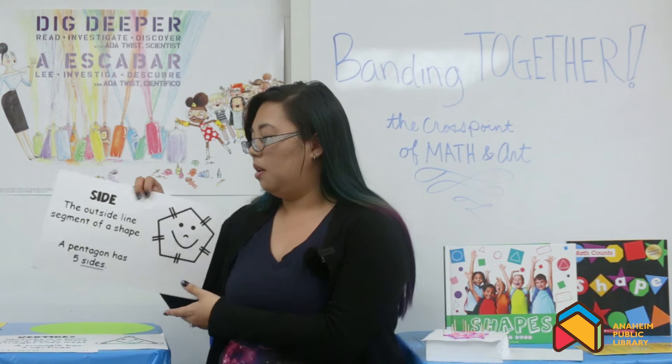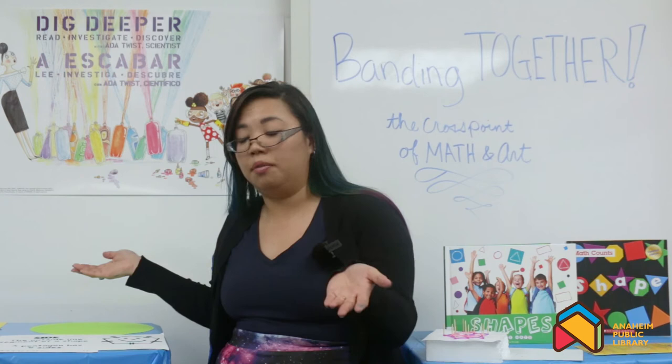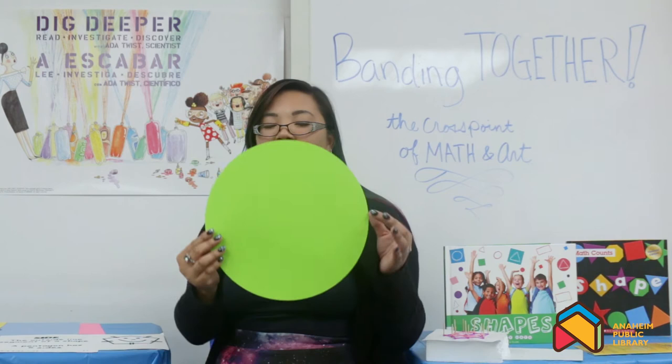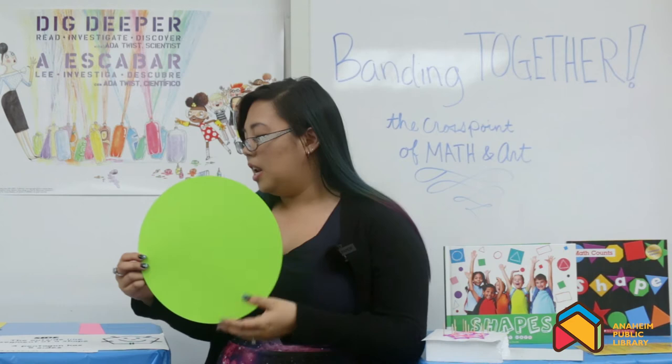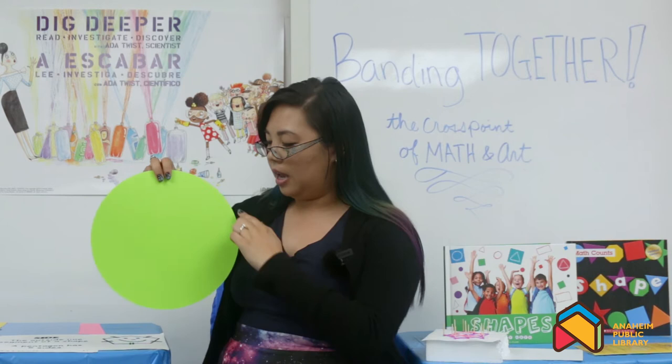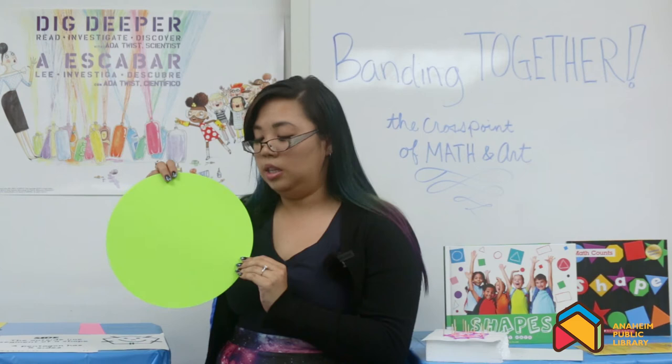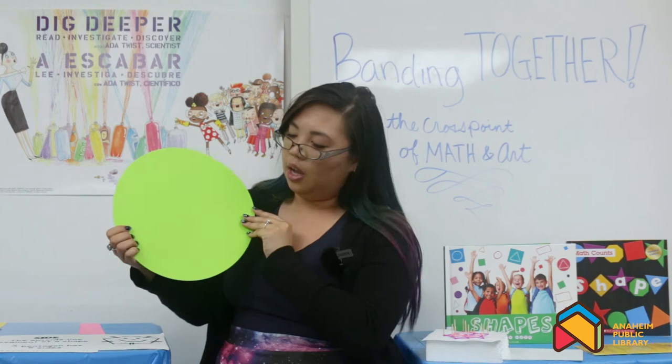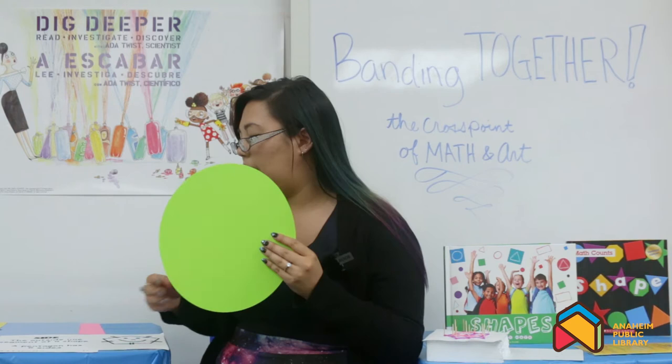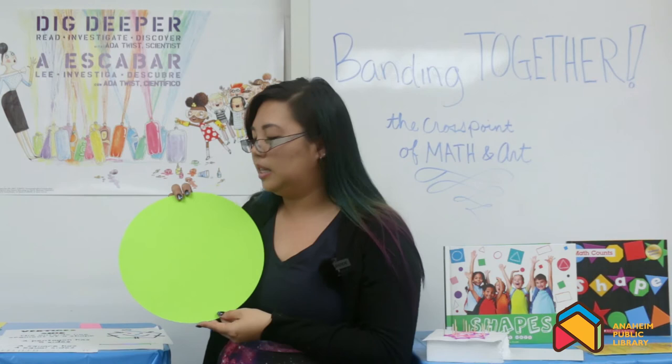Maybe we should check out a couple of different shapes and see if some of our shapes have all of those things, some of those things, or none of those things. Here I have a shape we all know — a circle. Does a circle have a side to it? The outside line segment of a shape? Maybe it has a side — not a straight side, but a curved side. Does it have any vertices? I don't believe it has a vertex we can see. And does it have an equal side? I don't think so. Maybe we should explore some more shapes.